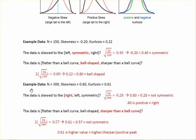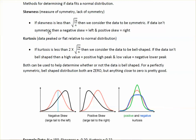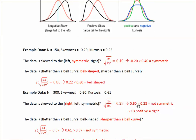Example 2: n=300, skewness=0.60, kurtosis=0.61. We take the square root of 24 over 300 and get 0.28. Our skewness of 0.60 is greater than 0.28, so it's not symmetric. Since 0.60 is a positive number, the data is skewed right.